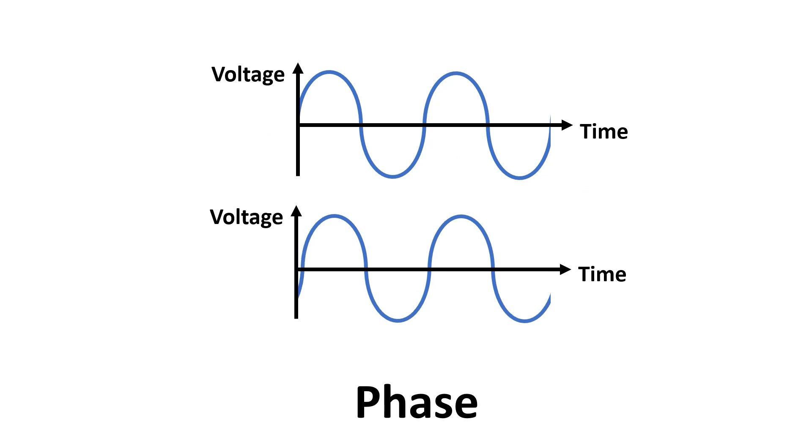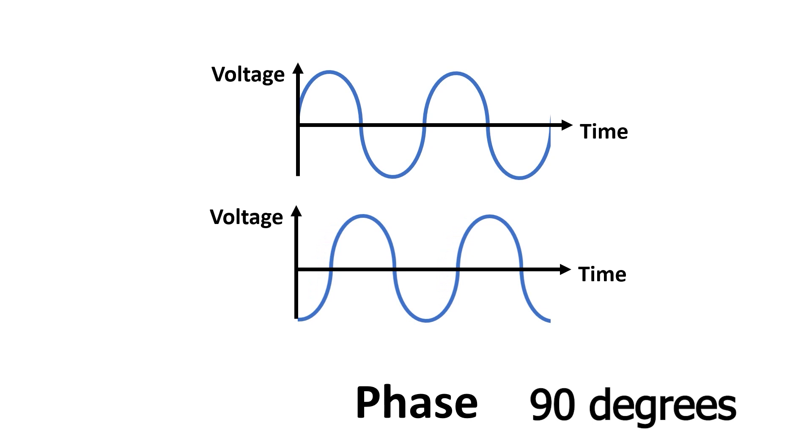And finally, we have phase. And we measure phase relative to some fixed point in time, or relative to another sine wave. Here, both waves are in phase, which means the bottom trace has a zero degree phase shift. When we offset them by a quarter of a cycle, it's a 90 degree phase shift.